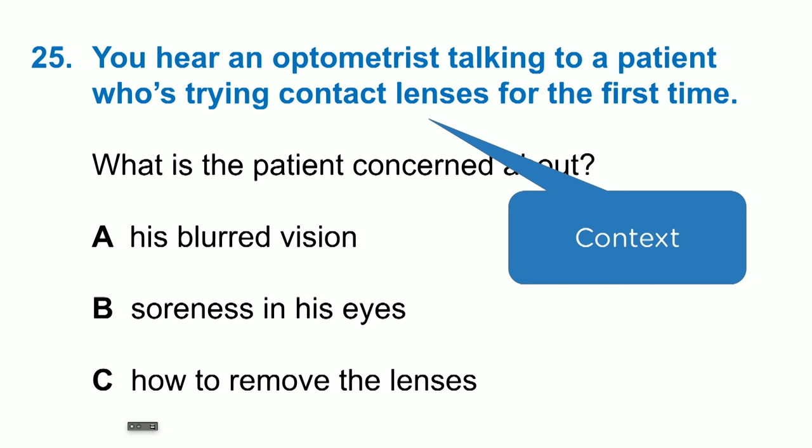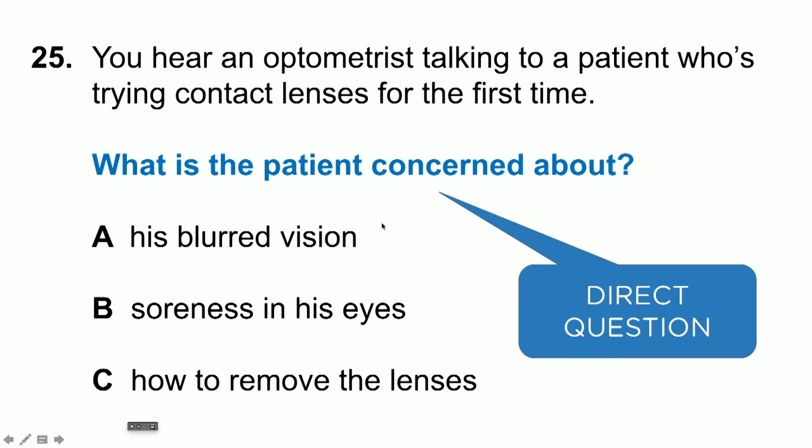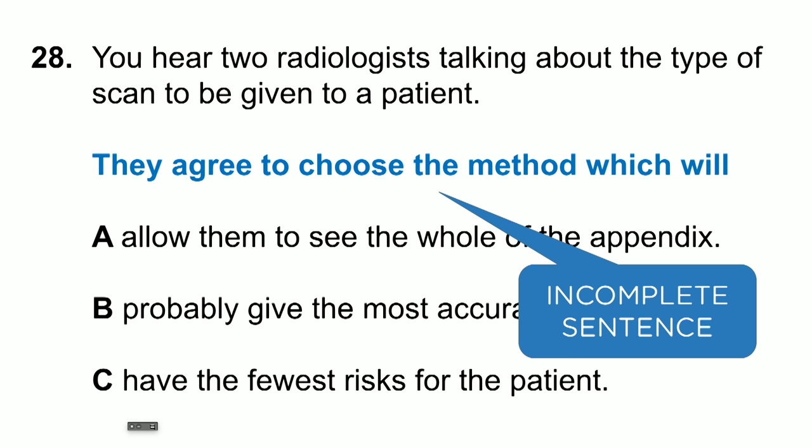The first part of the question is a context sentence, and this will be read out to you in the audio. It'll say: question 25, you hear an optometrist talking to a patient who's trying contact lenses for the first time. The second part of the question is the question prompt — a direct question in that it's a full sentence with a question mark. But it is also possible to see a type of question which is an incomplete sentence.